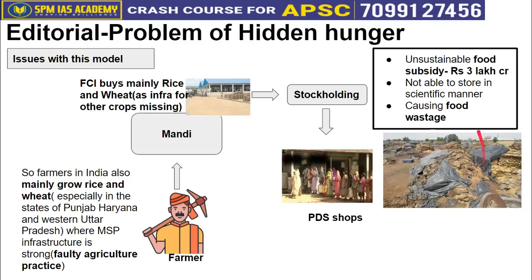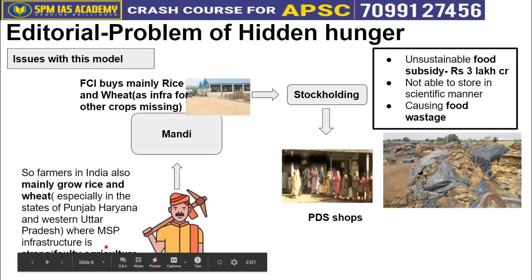There is also a heavy and unsustainable load of food subsidy on FCI, because FCI purchases from its own funds and the government compensates later. FCI is under a food subsidy debt of approximately ₹3 lakh crore. India provides the highest food subsidy in the world, which has reached an unsustainable level. If this subsidy doesn't reach the poor effectively, it is meaningless — especially when food grain is being wasted to rats or rain.